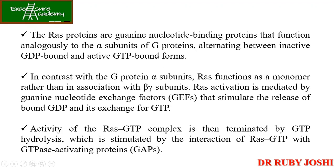RAS proteins are G proteins — guanine nucleotide binding proteins — which function analogously to the alpha subunits of G proteins, alternating between inactive GDP-bound and active GTP-bound states. RAS activation is mediated by GEF — Guanine nucleotide Exchange Factor — which stimulates the release of bound GDP in exchange for GTP, converting RAS from inactive to active.